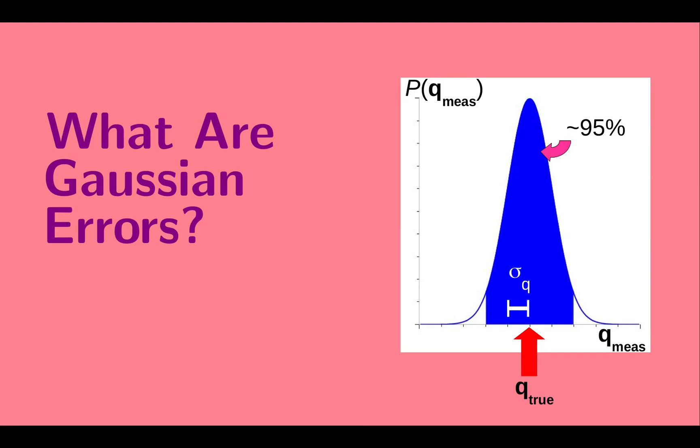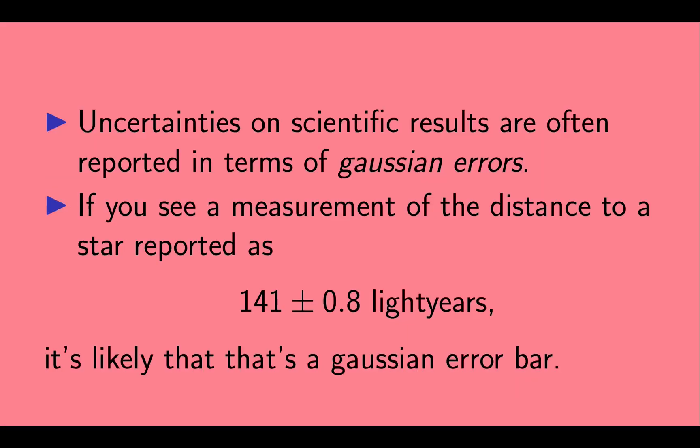Hi, welcome to what are Gaussian errors. Uncertainties on scientific results are often reported in terms of something called Gaussian errors.